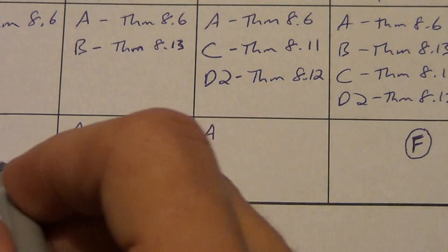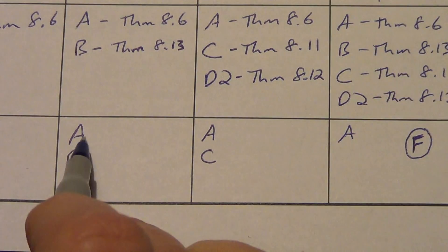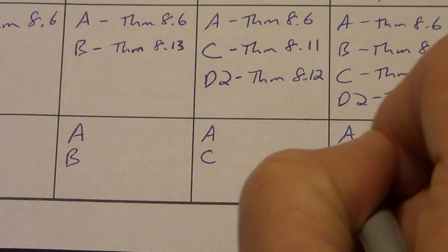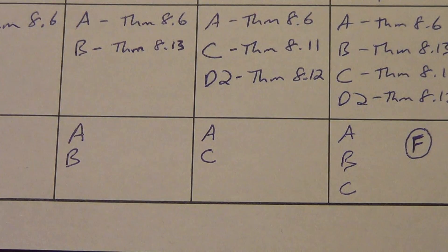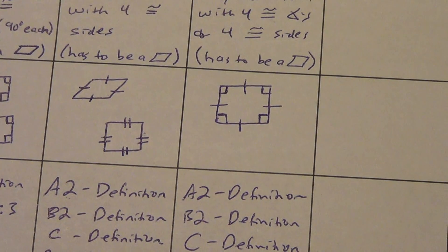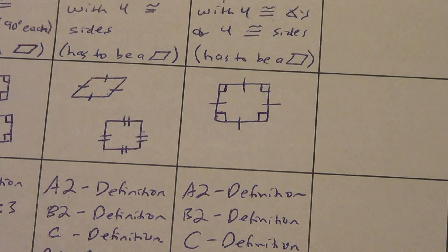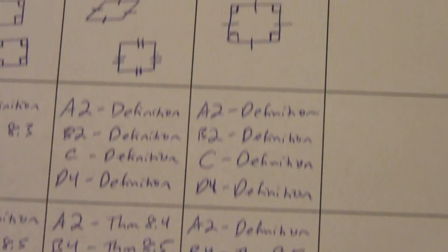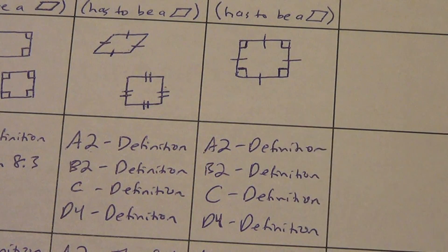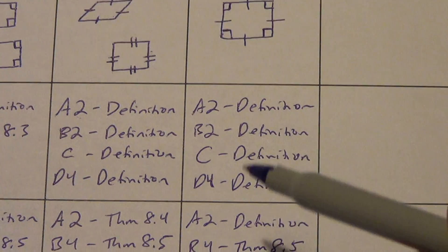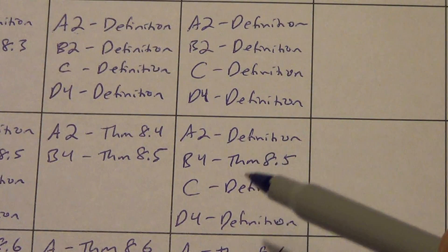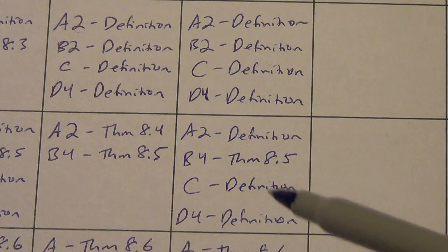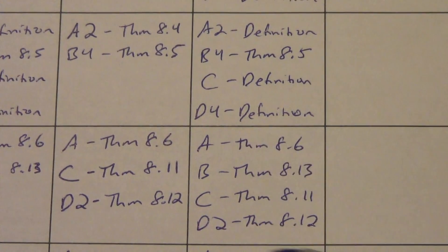Let's go down to this one. A — it was true here, it's got to be true here. B — yep. C — yep. That's it, that's a square. So what in the world did we just say? A2, B2, C, D4 all by definition. A2, B4, C, D4 by definition and theorem. A, B, C, D2 by all these theorems. What in the world did we just say? Let's look at it.